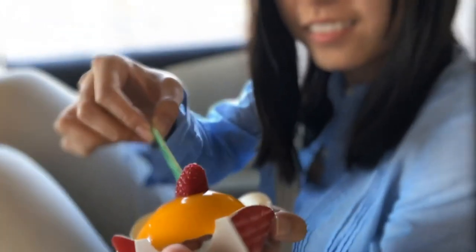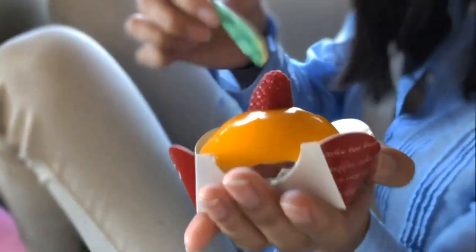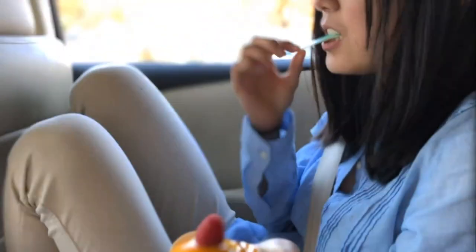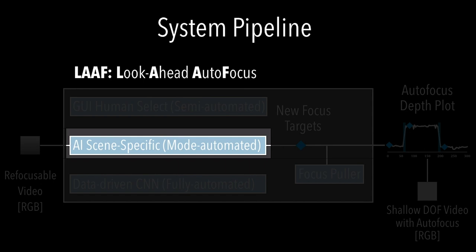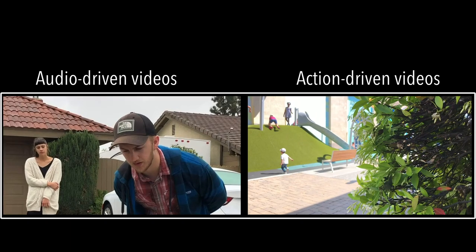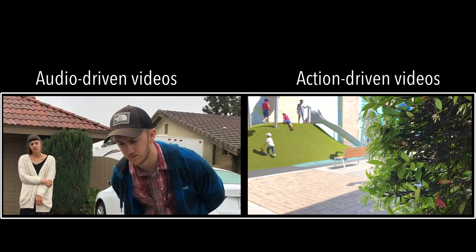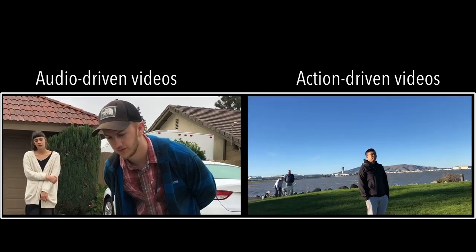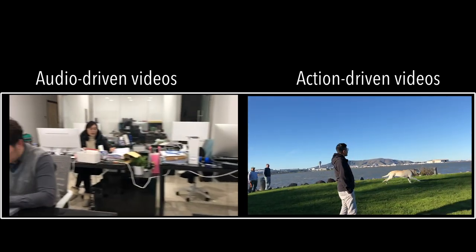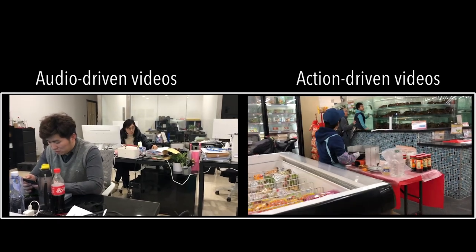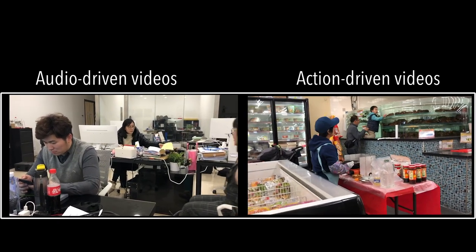Originally, it focuses on the mango tart, then shifts to the face as annotated, back to the tart, and finally back to the face. Next, we take a step towards automation by doing scene-dependent video understanding, such as running a face detector and an audio and action localizer, to analyze past and future video frames. We demonstrate examples for scenes that contain conversations or actions, where the system automatically focuses on each person before they speak, or on actions before they occur.